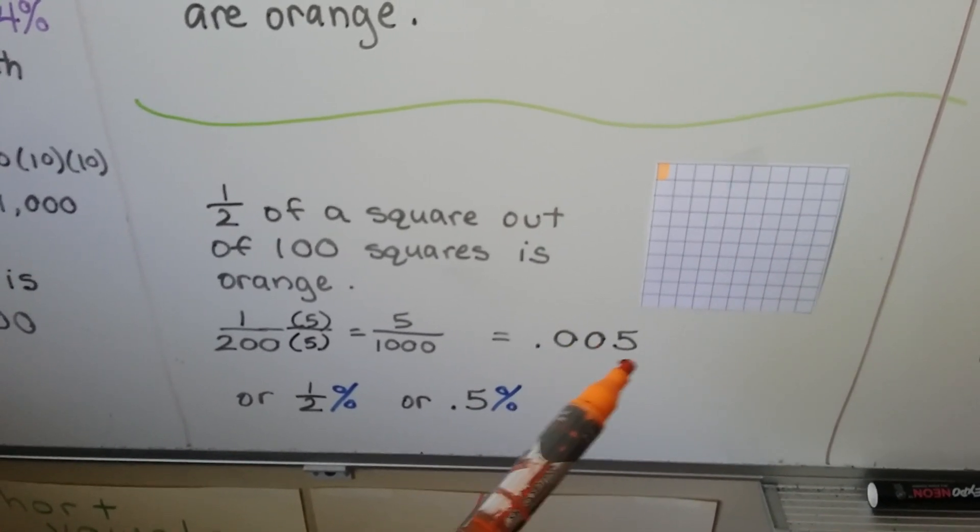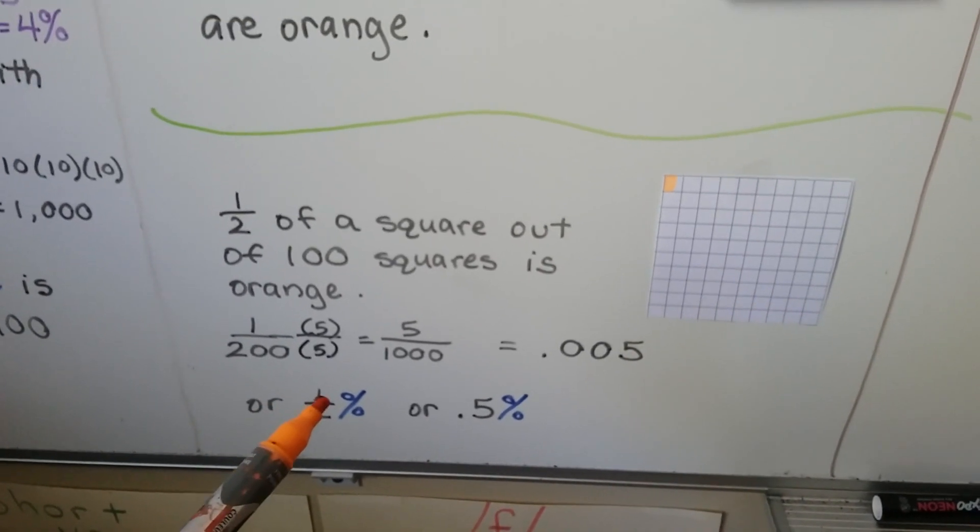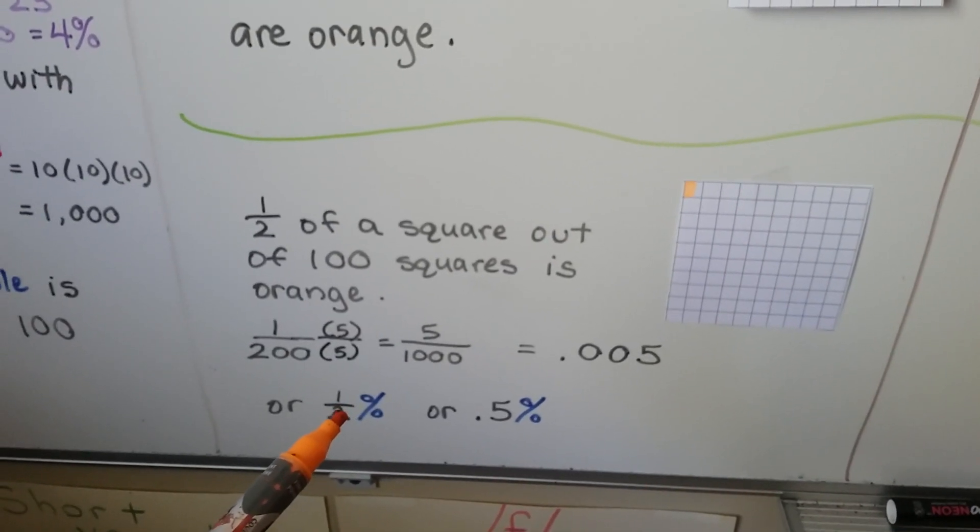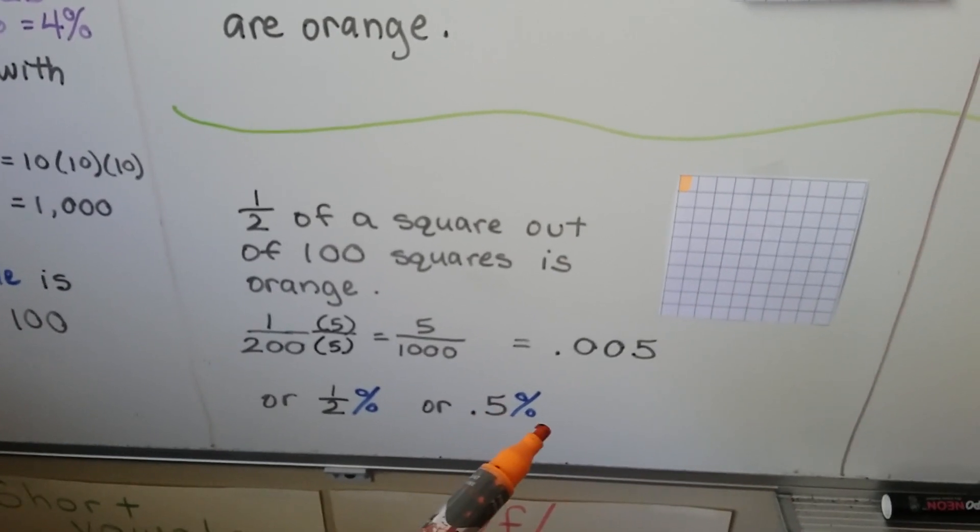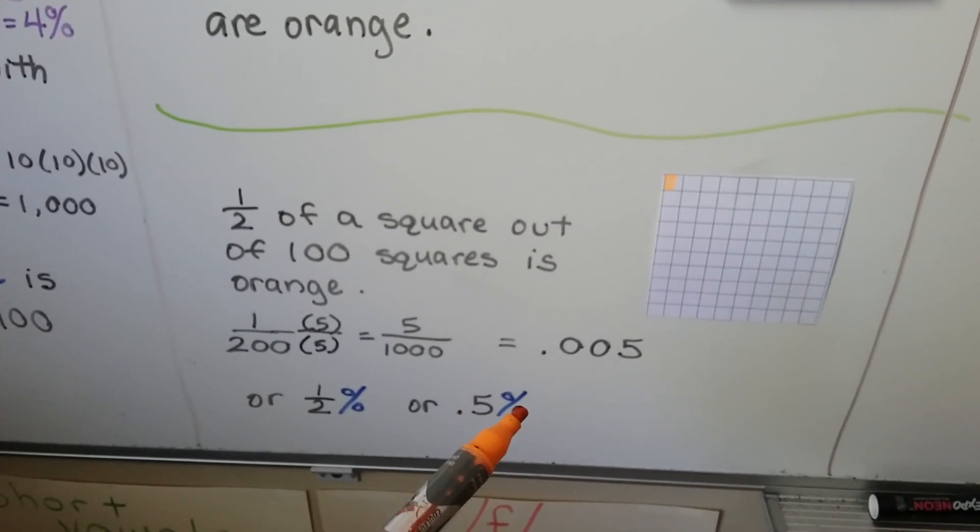We can multiply the 200 times 5 and the 1 times 5. They get multiplied by the same thing to make it 5 one-thousandths. So it's 0.005 or 5 one-thousandths. Tenths place, hundredths place, thousandths place.